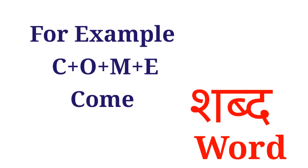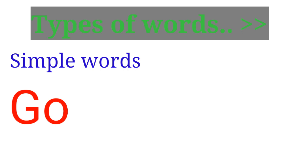Ab word kiske types ke hote hain? Jaise simple words: go (G-O), make (M-A-K-E). Ek letters ke simple word.